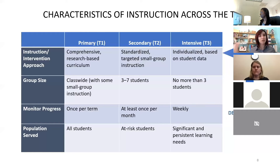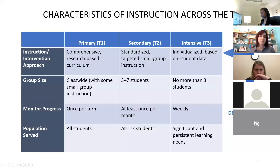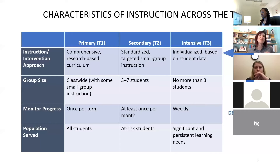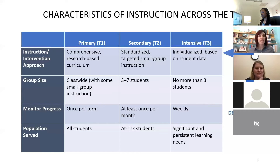Then we have students receiving tier three, which often needs to be more individualized and run more based on student data. Some schools argue, isn't this special ed? Well, students in special ed are general ed students first. They can receive tier two or tier three, but tier three does tend to be more individualized. You'll see DBI — data-based individualization — which is an approach to this intensive level.